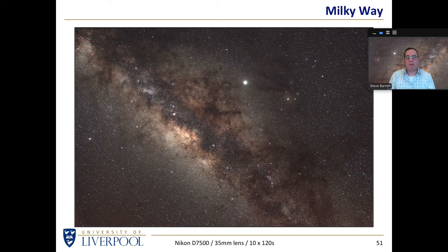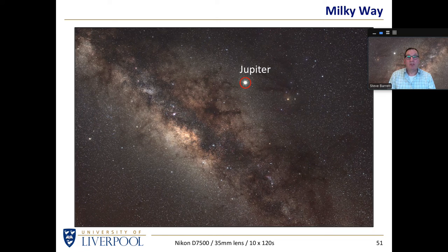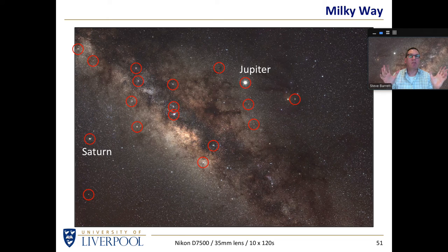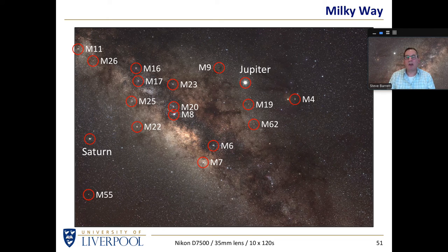If we just look at part of that image, we realise that as well as Antares and the rest of Scorpius, we have a couple of interlopers: the very bright Jupiter, which is so bright it's almost like light pollution in an image like this, and also Saturn. These images were taken in 2019 when Jupiter and Saturn were not that far apart and relatively close to the centre of the galaxy. Taking an image like this, you realise you've got a huge number of nebulae and star clusters. If you're shooting with a 35mm lens with a reasonable number of megapixels, you can see detail in all of these objects.